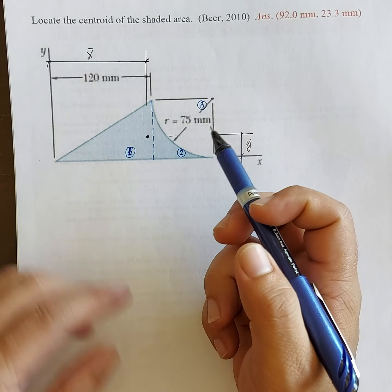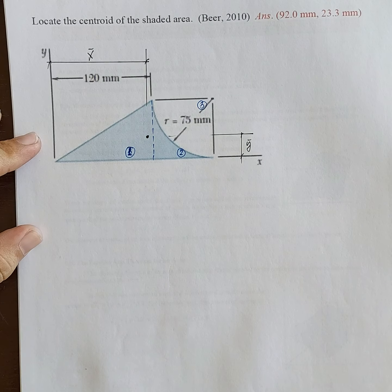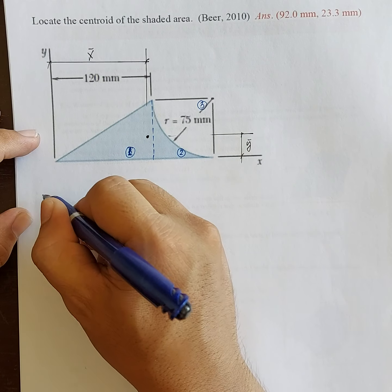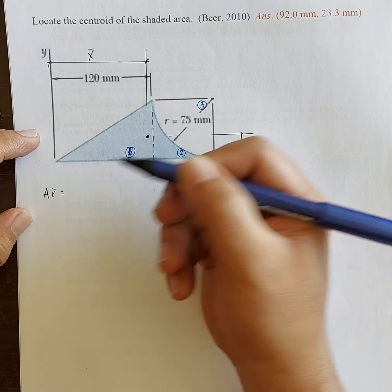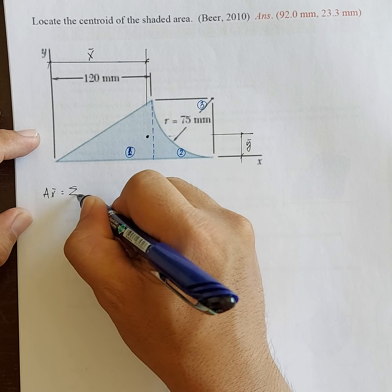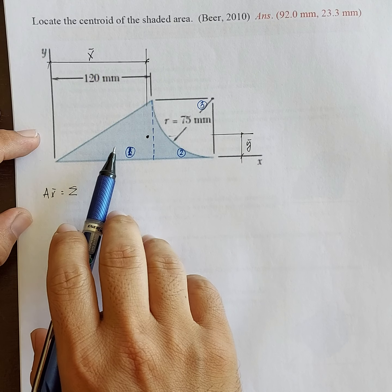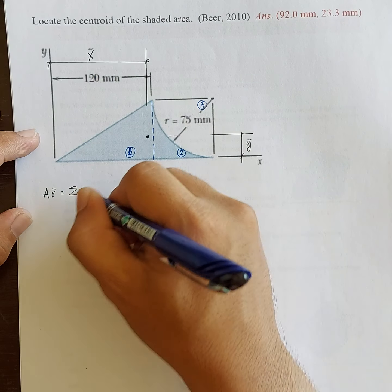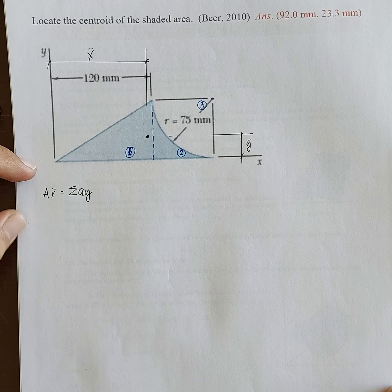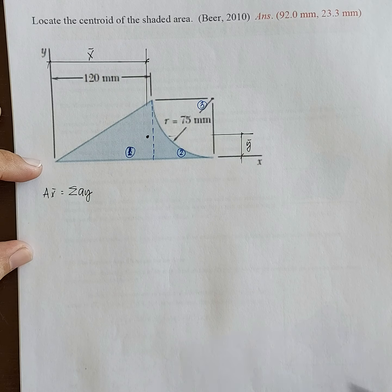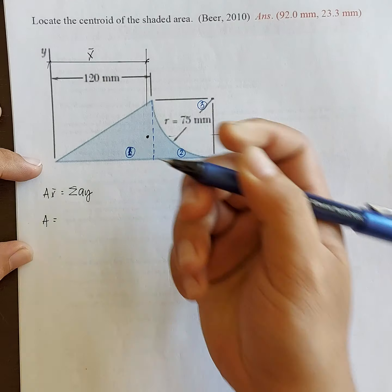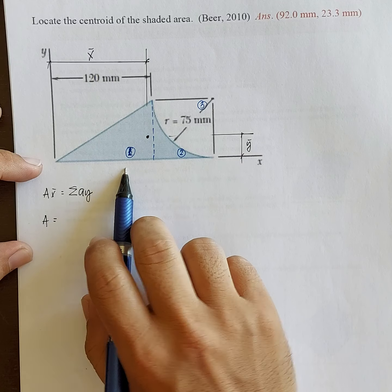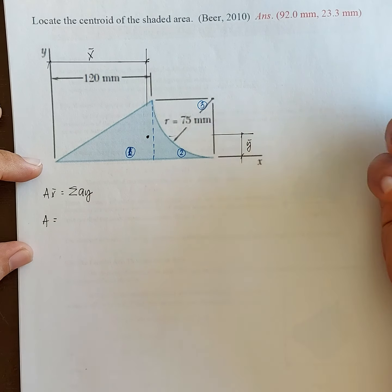So we'll solve for x-bar and y-bar. So again, start with the x-bar. The principle of moments. The total area times x-bar is equal to the summation of moments of each individual areas about the reference axis. So area times y. So solve for the total area.